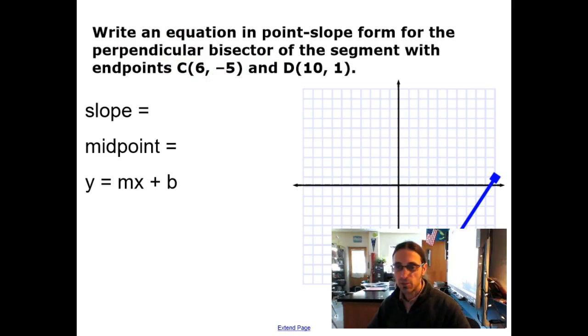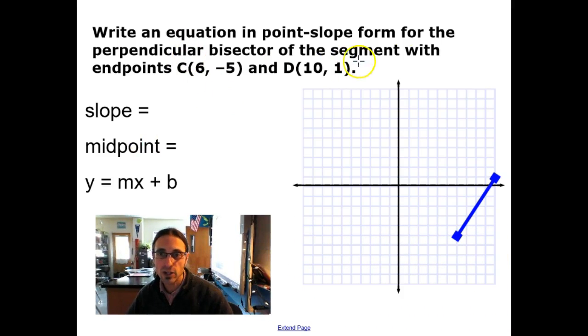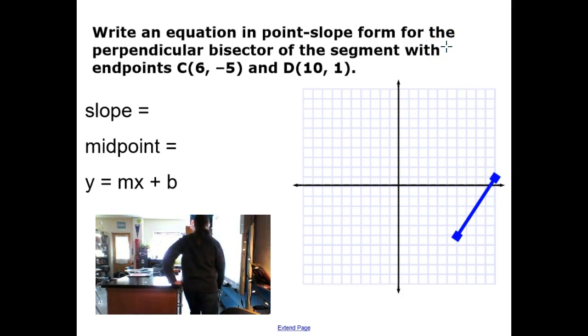Now, a little more challenging problem is the following here, and I'm going to go to the board to work on this one. This is write an equation in point-slope form for the perpendicular bisector of the segment with endpoints (6, -5) and (10, 1).